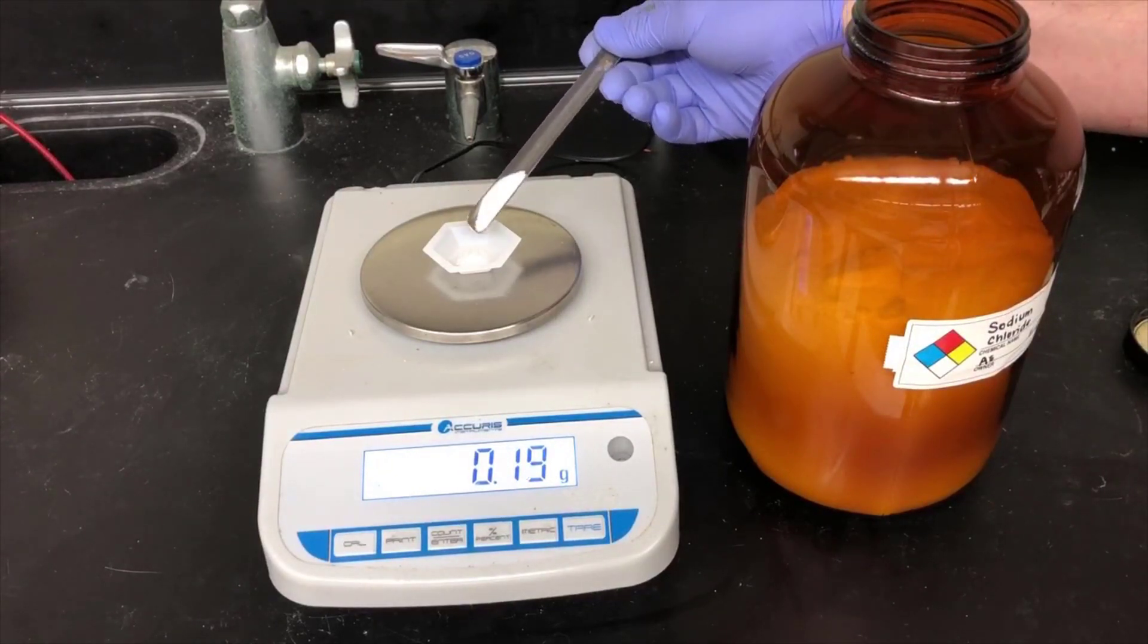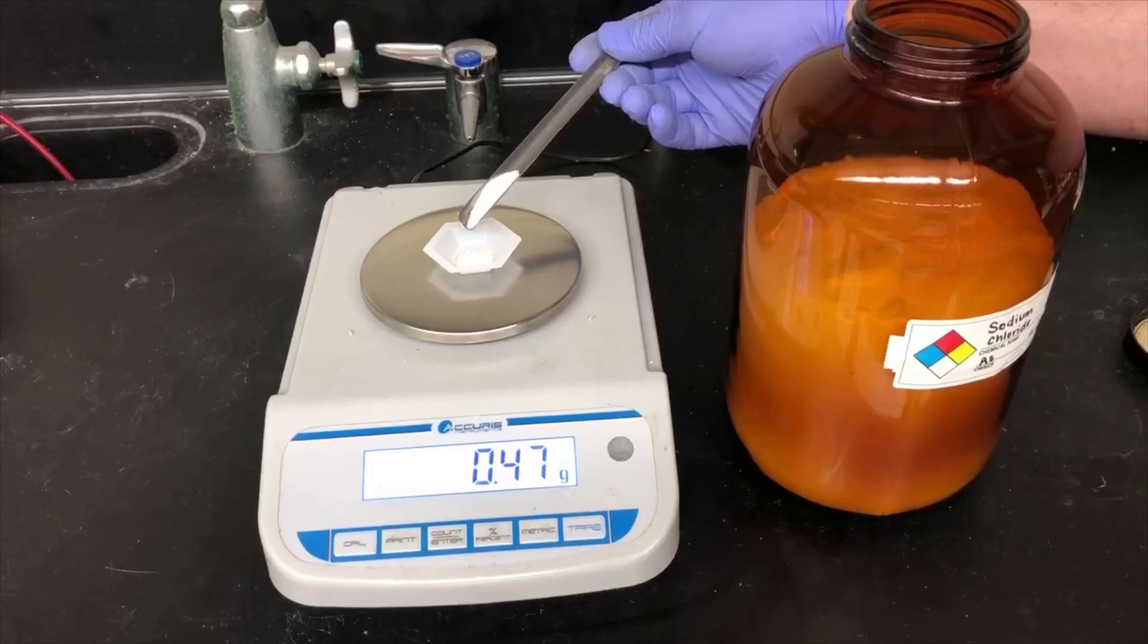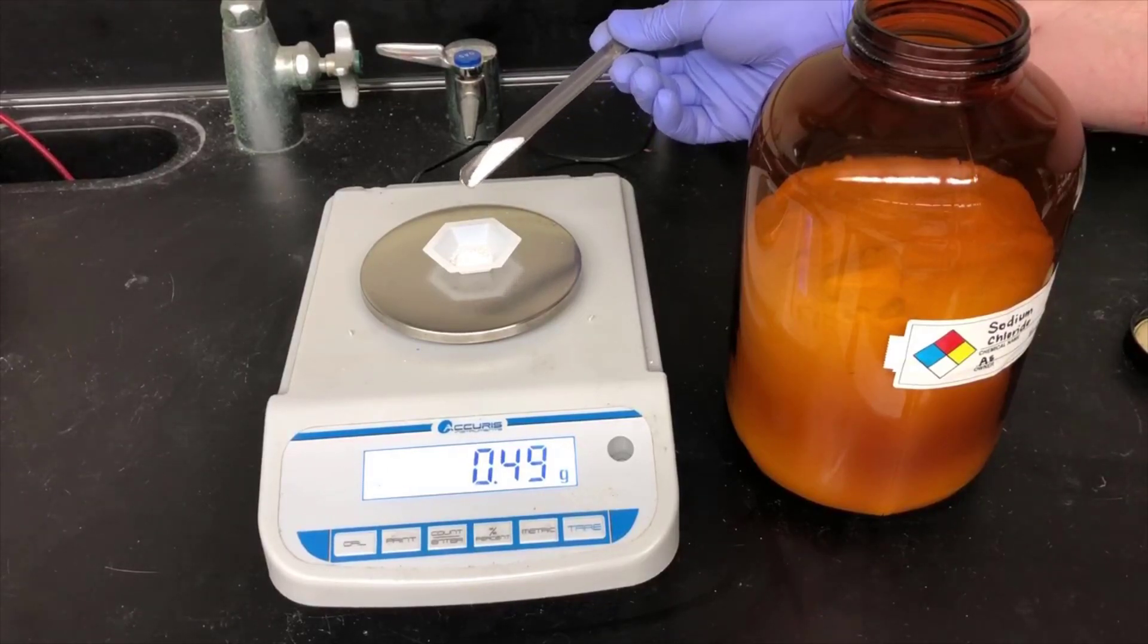The idea with adding salt is it'll make the water layer salty. That does two things. First of all, the salty water is a lot more dense, and it'll help settle the water layer out and away from the cyclohexanone layer. Secondly, it makes the cyclohexanone a lot less soluble in the water, so we're less likely to lose cyclohexanone in the water layer.